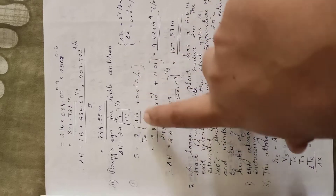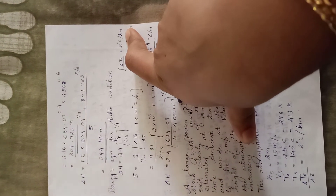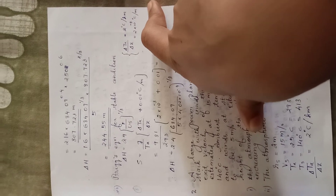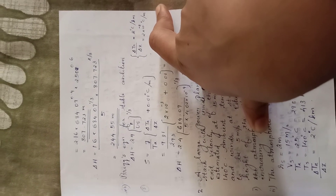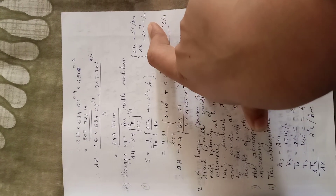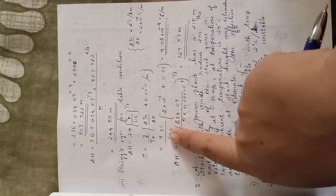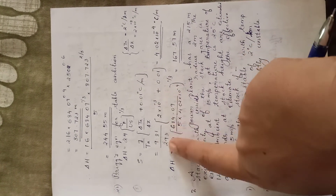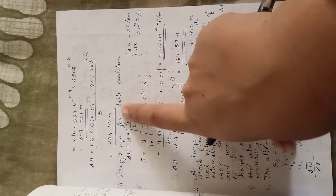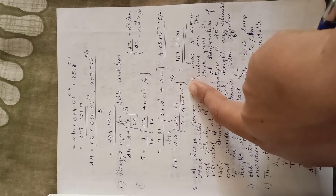Since delta TA by delta Z is given in degrees Celsius per kilometer, we convert it to degrees Celsius per meter by multiplying by 10 raised to minus 3. After transferring the units and computing S, we substitute into Briggs' equation to get the value of delta H for stable conditions.